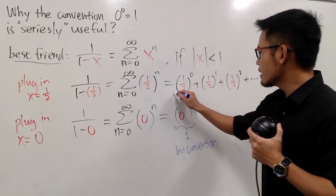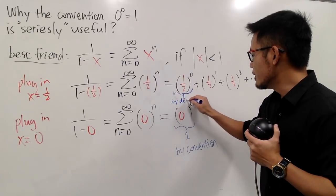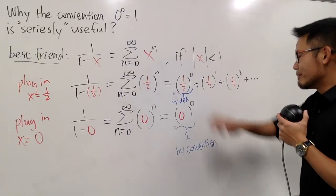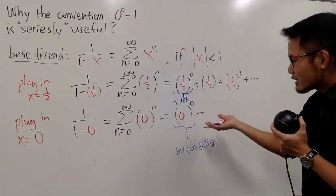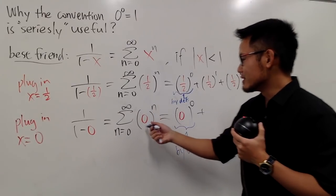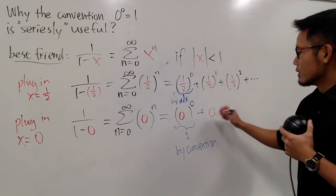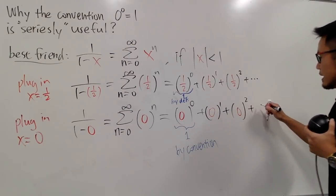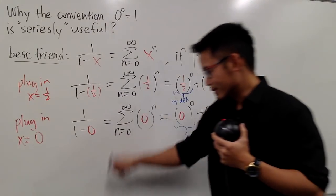And right here, this right here was equal to 1. This was, technically, by the definition of the exponent. But I'm not going to talk about this too much in this video. But, you see, this is actually the jet, because I can still plug in 0 into the rest. I will have 0 to the first power plus 0 to the second power plus dot dot dot.